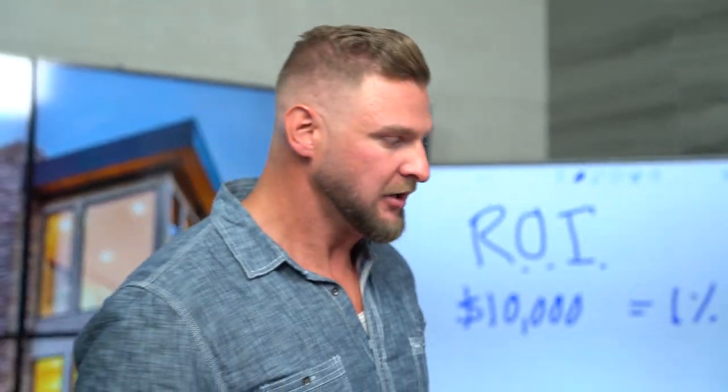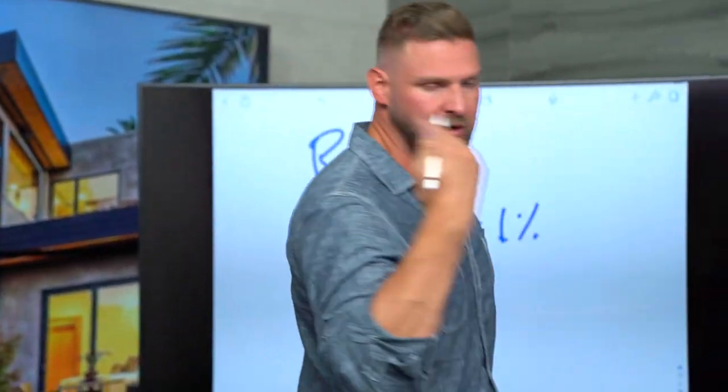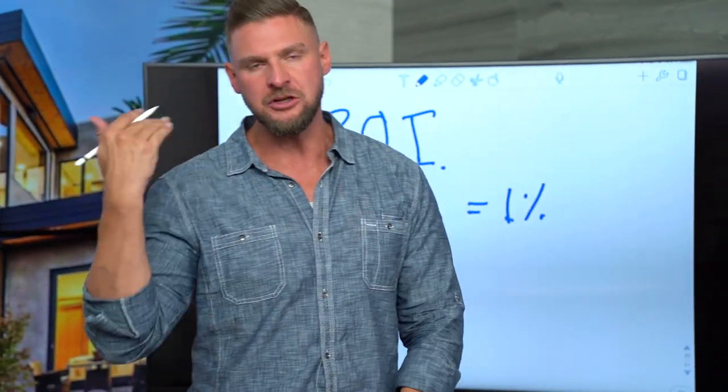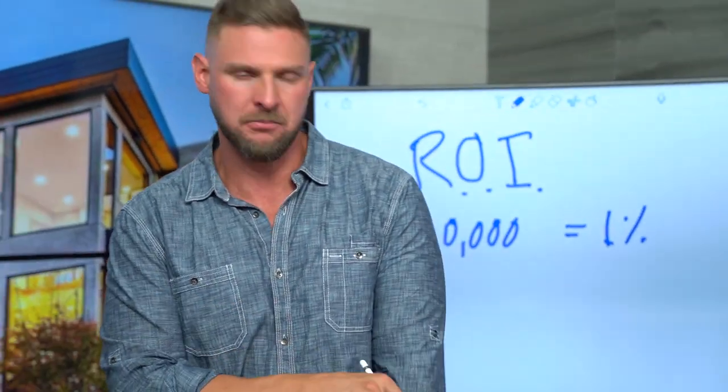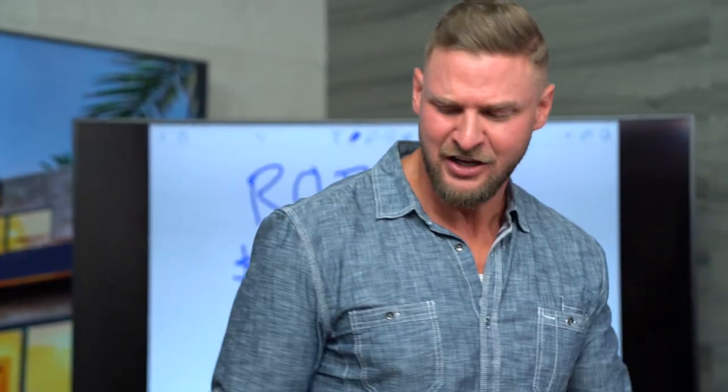My goal is to always be double digit — that's my standard. Double digit means I'm earning 15, 20, 25, 30, 35% on my money. You can't do that with 401Ks and IRAs and traditional investments — they're just not designed to do that. So what's my ROI on a property? I'm going to break it down really simple.